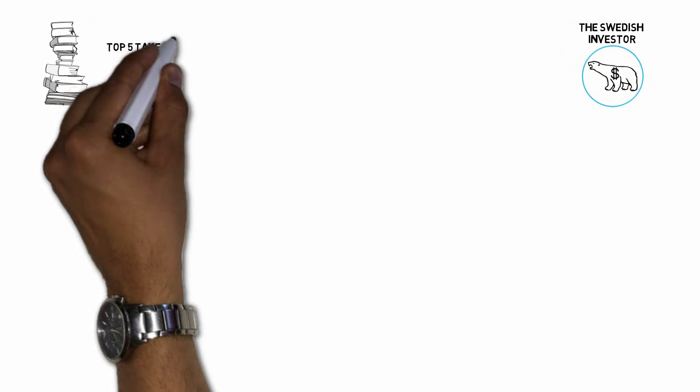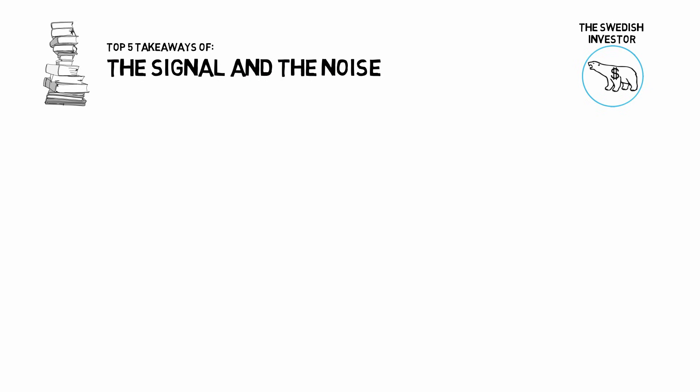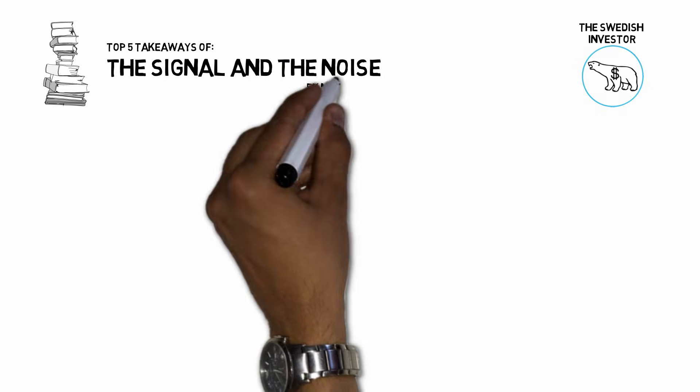This is a top 5 takeaway summary of The Signal and the Noise, a book about the art and the science of predictions written by Nate Silver.